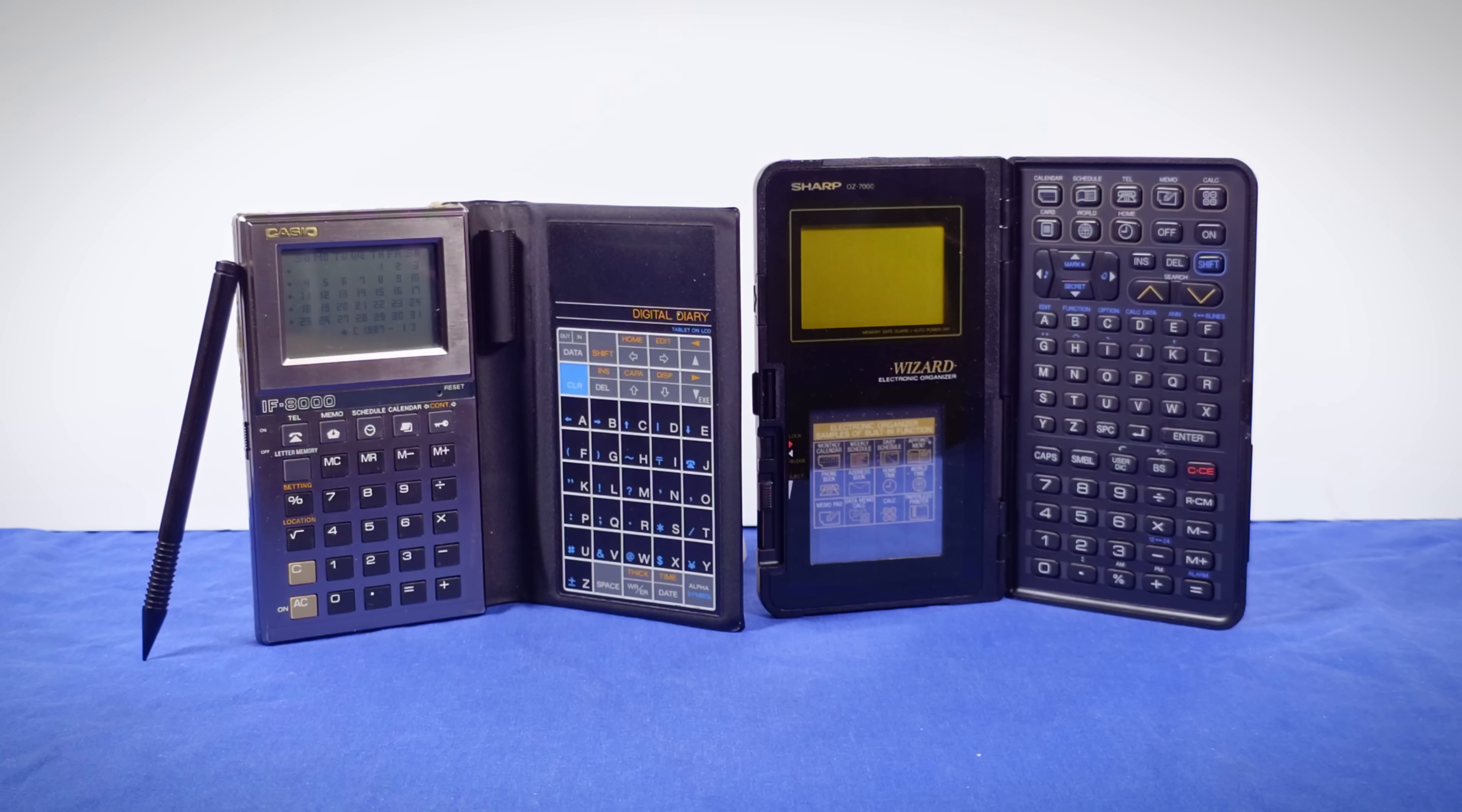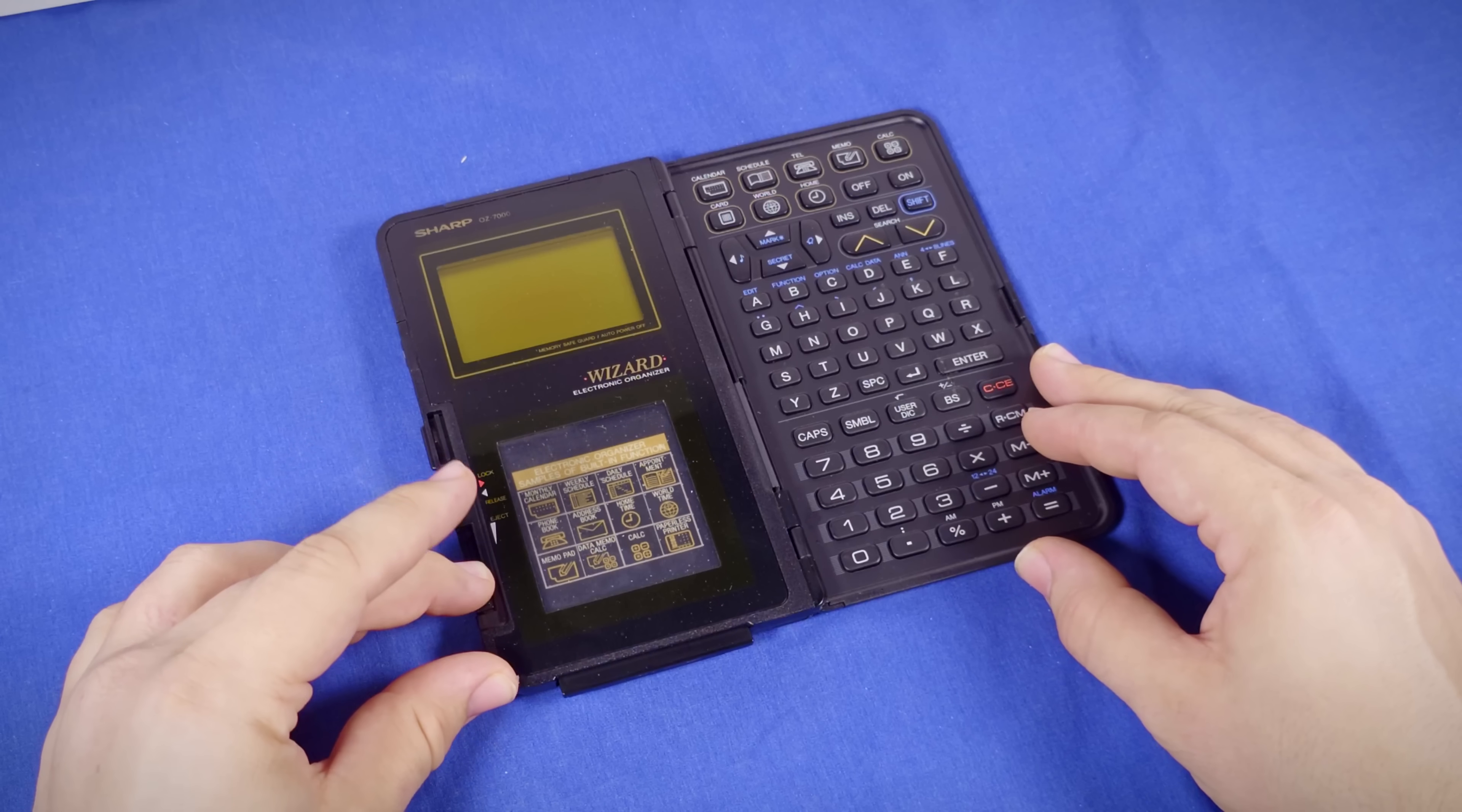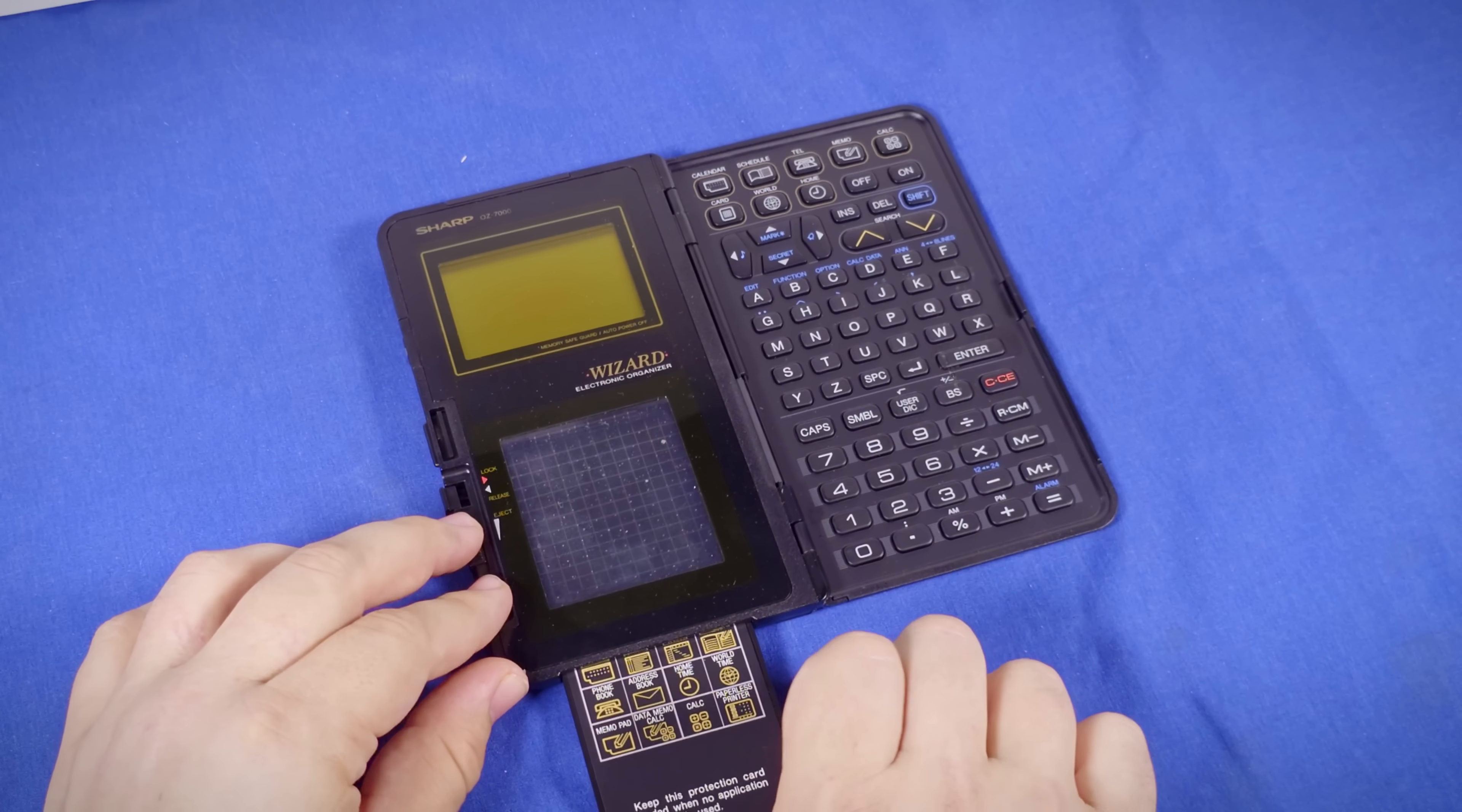This leaves us with the two classic PDAs. The Sharp Wizard is a pocket database capable of holding contact info, notes, and can have its functionality expanded with slot-in cartridges.